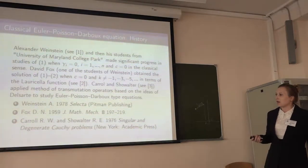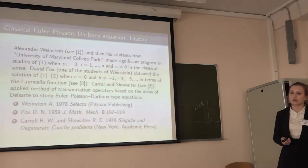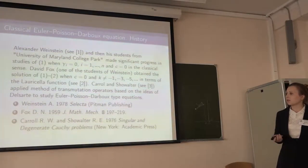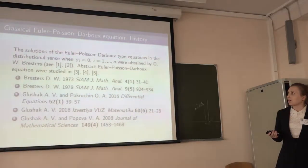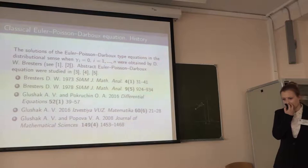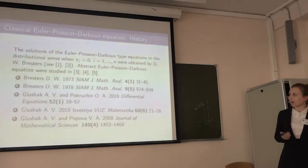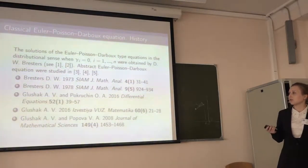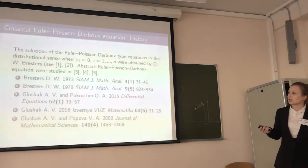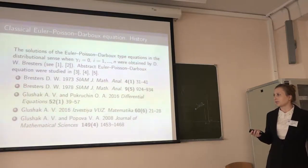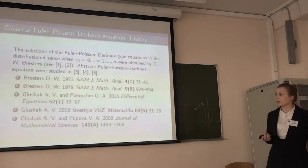We present papers where it is possible to find these results which I mentioned. The idea to use the Fourier transform to solve this problem, when gamma_i and c are equal to 0, was done by Molotkov, and for the abstract polar corresponding equation, results were obtained by Bouchard.